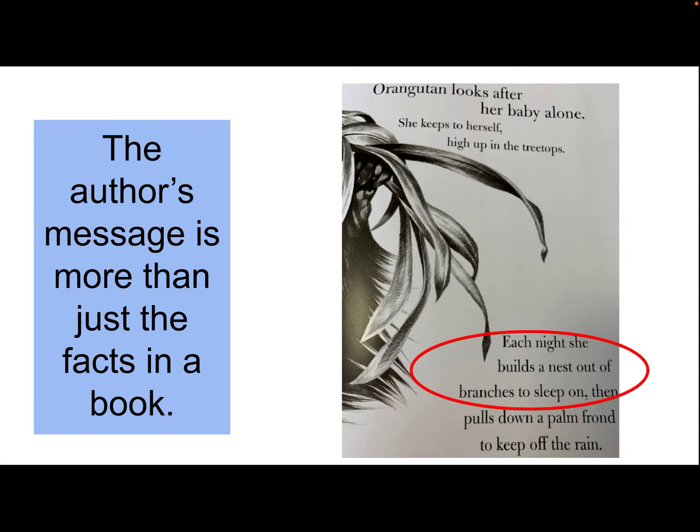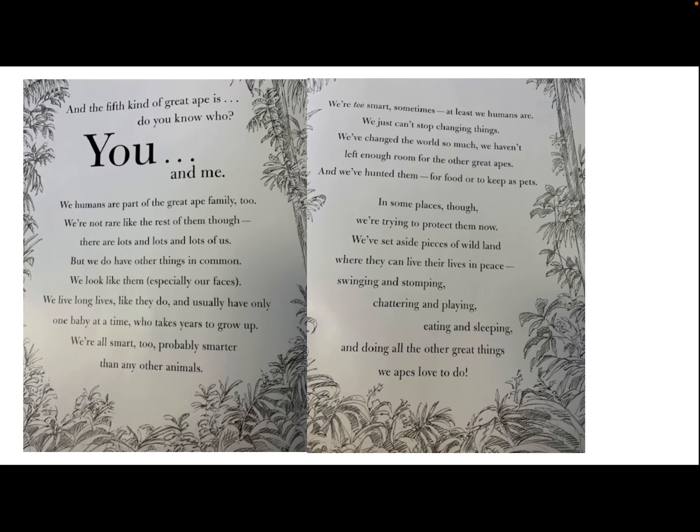In the book Ape, the author tells us that each night she builds a nest out of branches to sleep on, then pulls down a palm frond to keep off the rain. This is a fact about an orangutan. It is not the author's message.